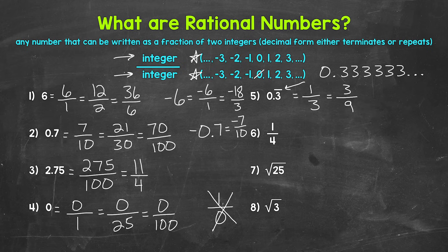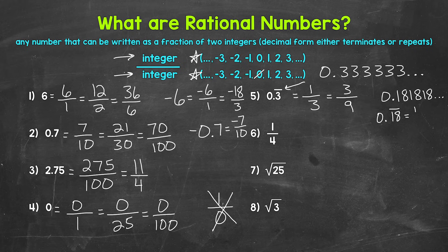Even something with multiple digits that repeat will be rational. For example, 0.181818... — 18 repeating — has a pattern, so it's rational. In fractional form, 0.18 repeating can be written as 18 over 99, or even 2 over 11.